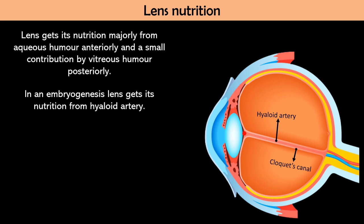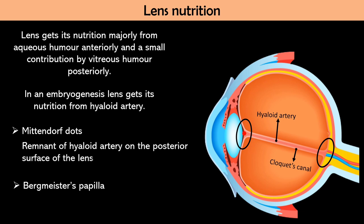But what if it does not disappear completely? It can lead to congenital abnormalities and those abnormalities can be Mittendorf dots and Bergmeister's papilla. Let's have a look at the picture here and see this hyaloid artery and Cloquet's canal which is traveling from optic disc to the back surface of lens. If it does not disappear completely, then the remnant of hyaloid artery on the posterior surface of lens is known as Mittendorf dots and remnant at the optic disc is known as Bergmeister's papilla. We will see again about Mittendorf dots in abnormalities of lens little more in detail.